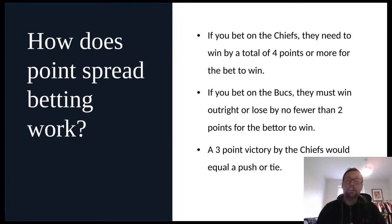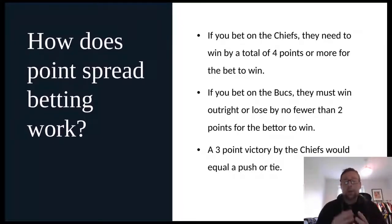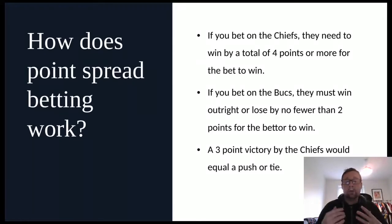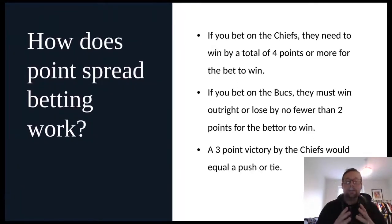If you go with the underdog Bucks on the point spread of plus three, the Bucks must either win the game outright or lose by two points or fewer. So you have two chances to win with the underdog Bucks — either they win the game, or they lose by one or two points. Three or more points and it's a losing bet. This is a great way to make money because if you bet on the Bucks, they have two ways to win — they can upset the Chiefs, or you can get a winning bet by them losing by just one or two points.